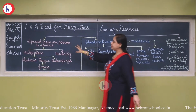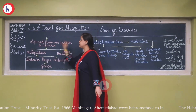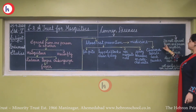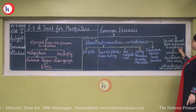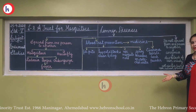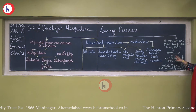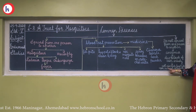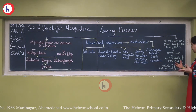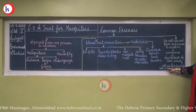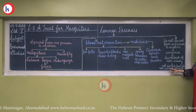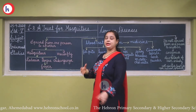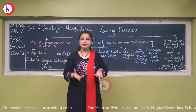We saw the diseases which spread from one person to another. Now we will see the disease which does not spread from one person to another — that is anemia. Anemia is caused due to lack of iron in the body. To address this, we should eat iron-rich food like apple, beetroot, spinach, etc.